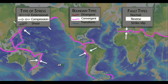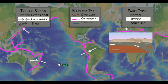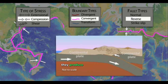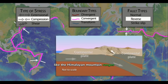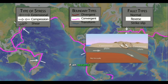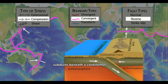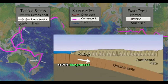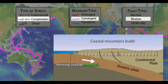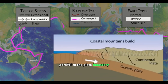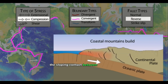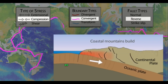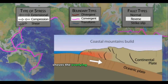Compressive stresses occur at a convergent plate boundary where two plates move toward each other. If two continental plates collide, they produce a broad uplift like the Himalaya mountain ranges with reverse faults parallel to the plate boundary. If an oceanic plate subducts beneath a continental plate, most of the faults occur within the overlying plate as it is compressed and buckles, forming coastal mountain ranges parallel to the plate boundary. The sloping contact between the plates is under high friction as the subducting plate shoves the overlying plate backwards.